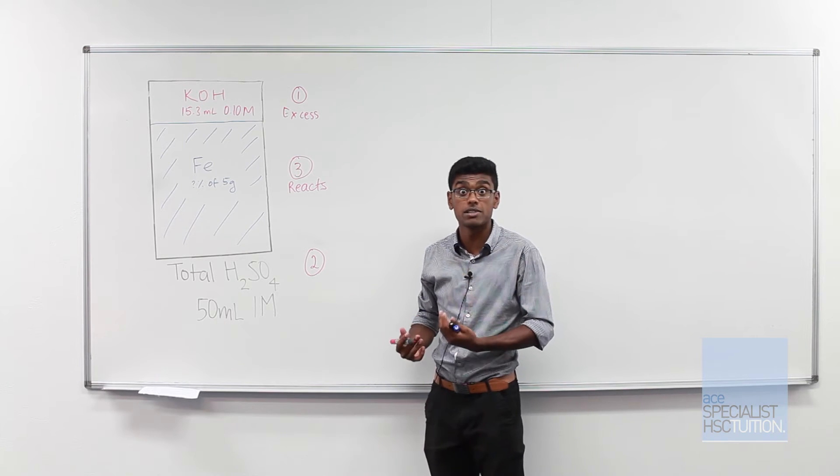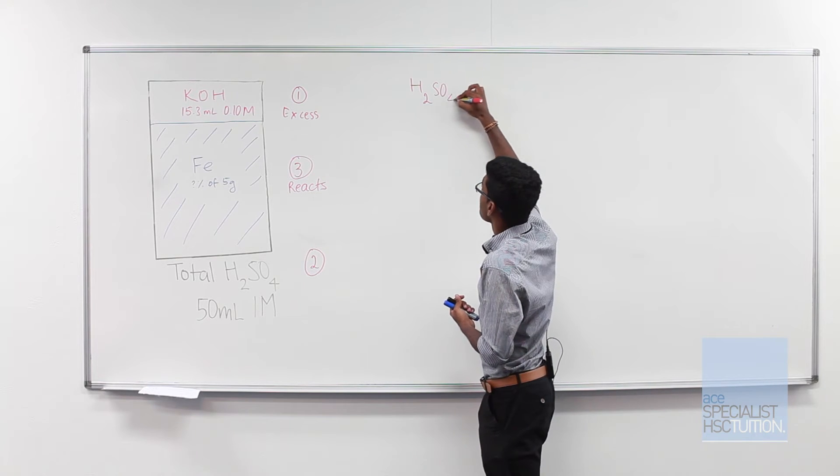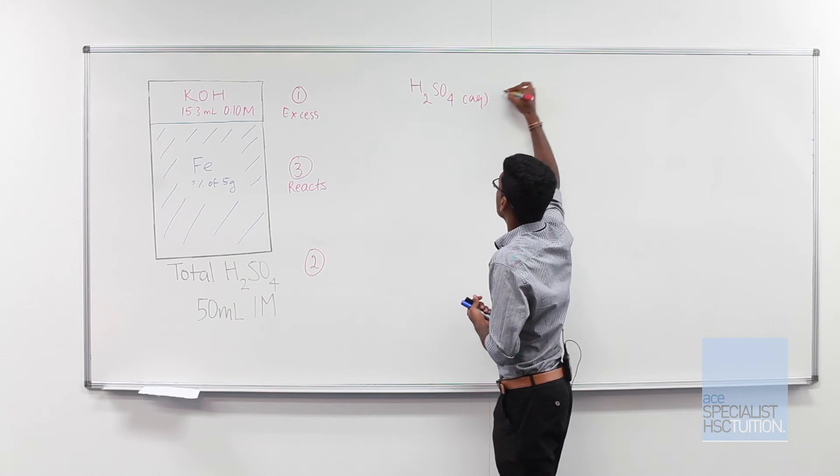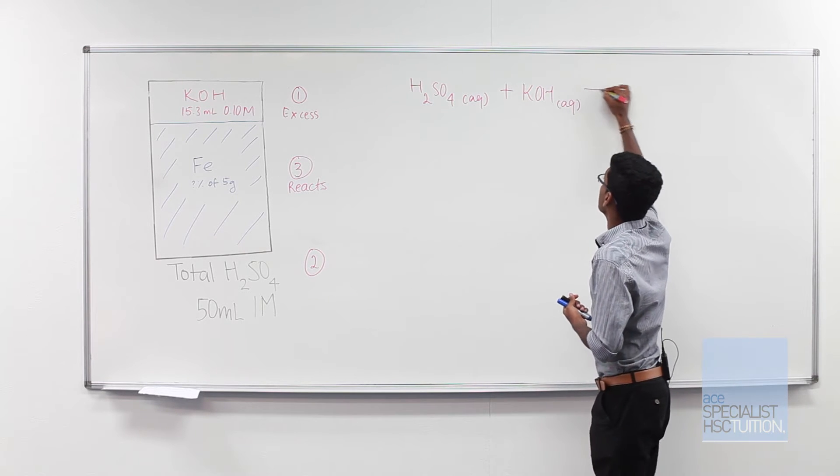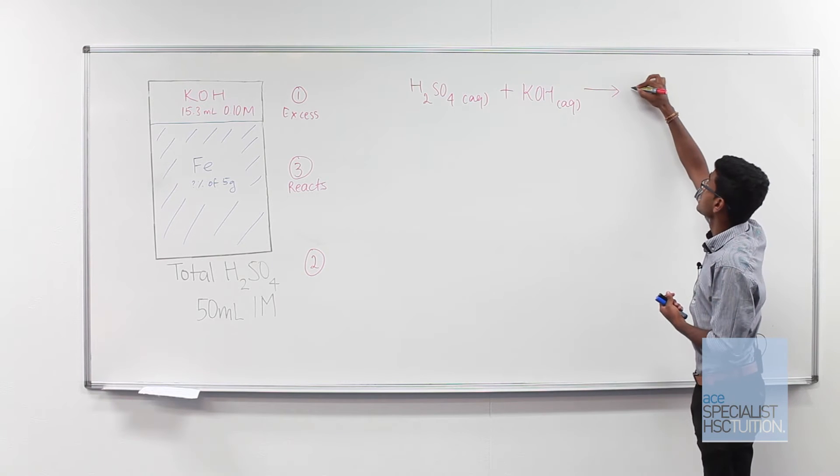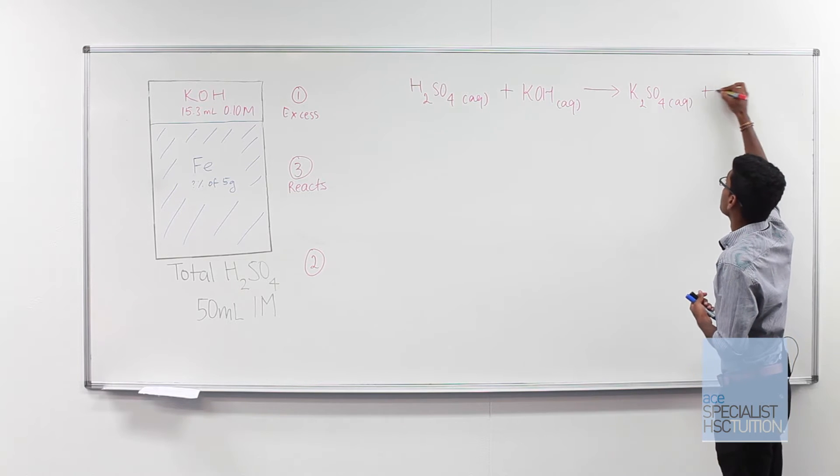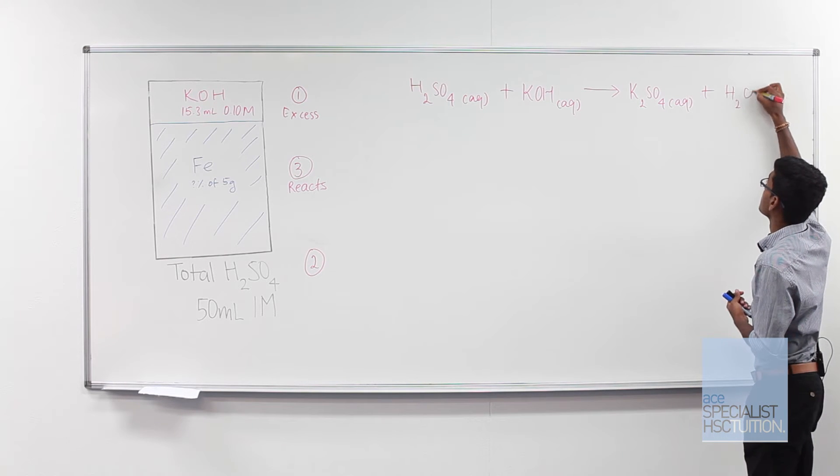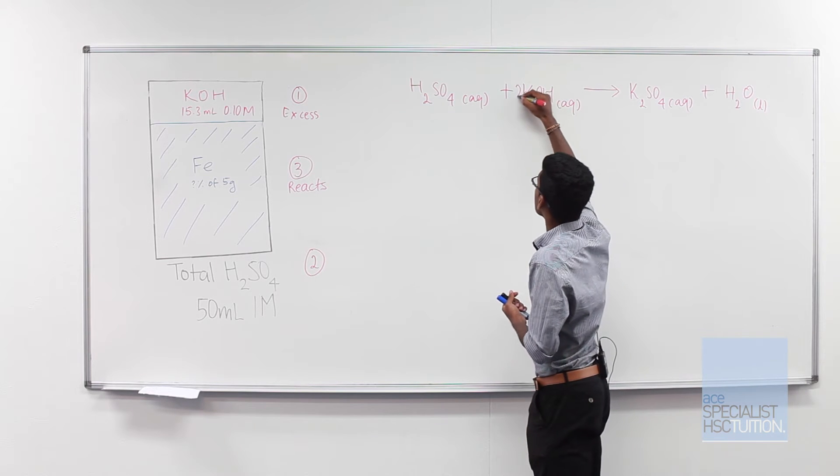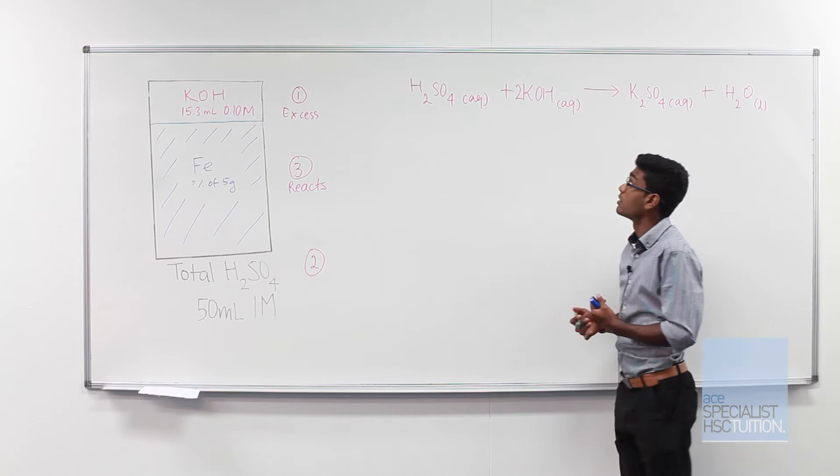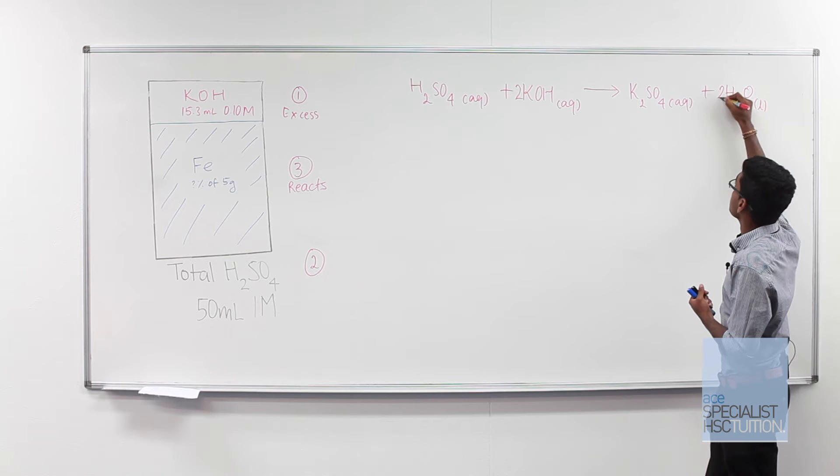So we'll write an equation to represent our reaction. So we have sulfuric acid reacting with potassium hydroxide, forming potassium sulfate and water in a simple acid-base reaction. Don't forget to balance your equation. So we need two moles of potassium hydroxide for every mole of sulfuric acid forming one mole of potassium sulfate and two moles of water.